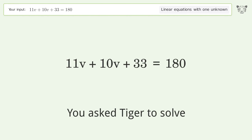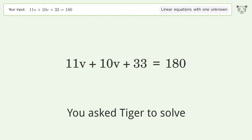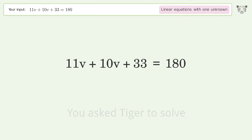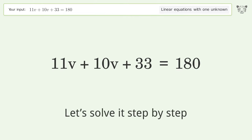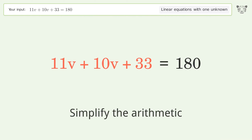Tiger is asked to solve a linear equation with one unknown. The final result is v equals 7. Let's solve it step by step: simplify the expression and simplify the arithmetic.